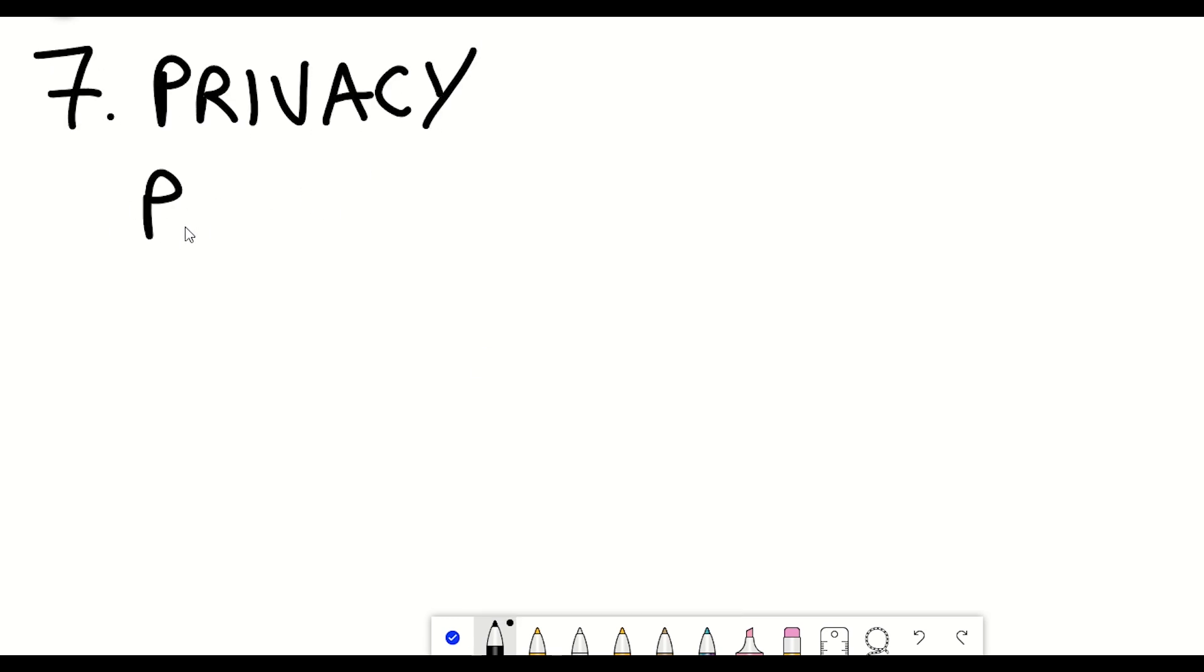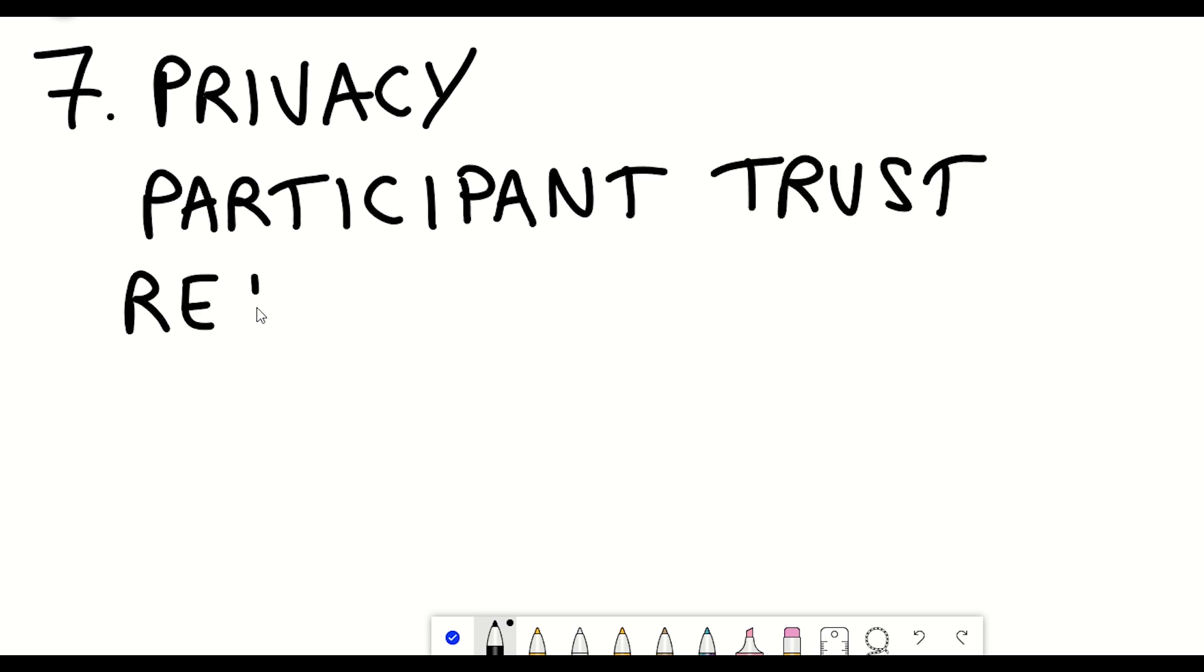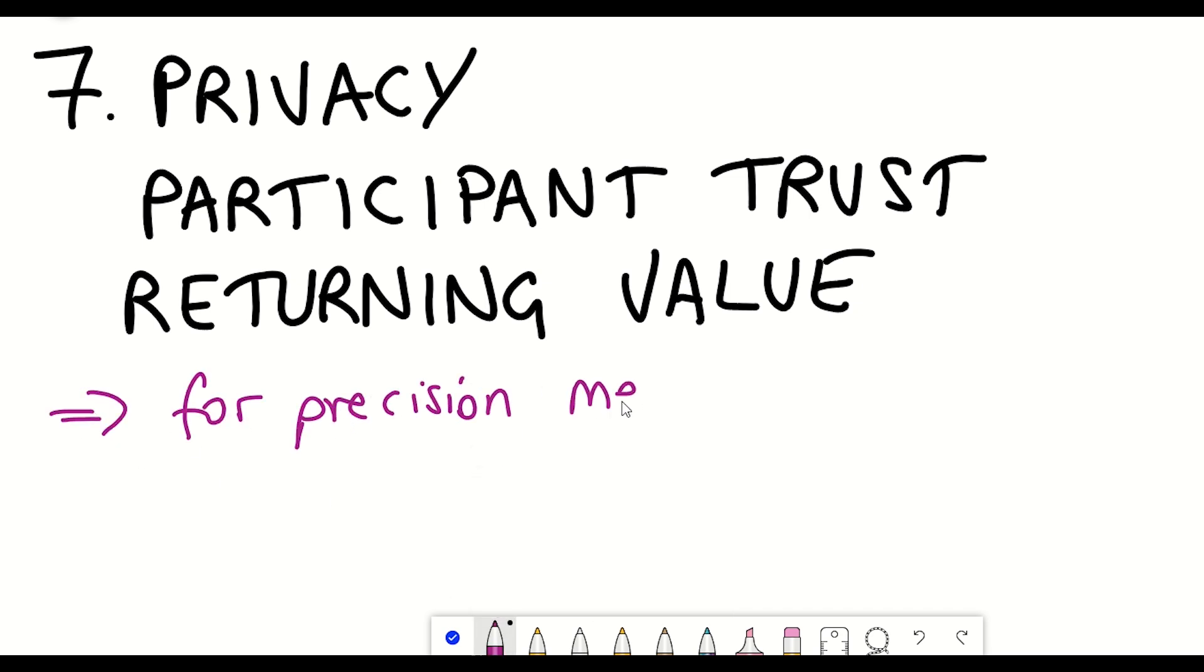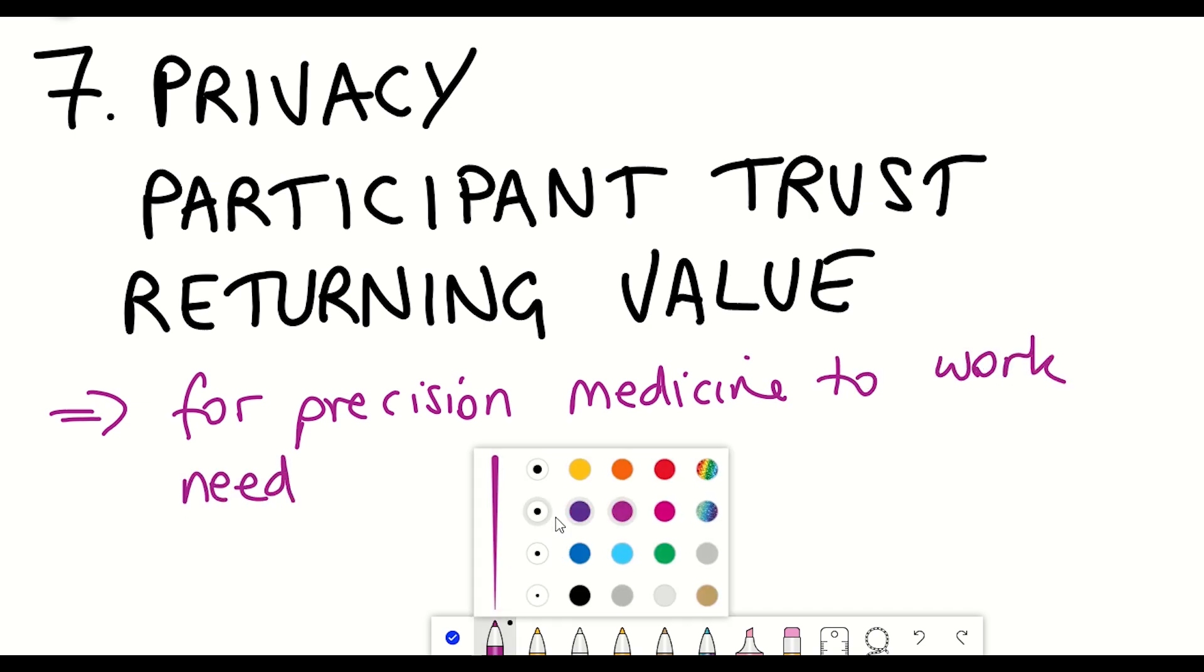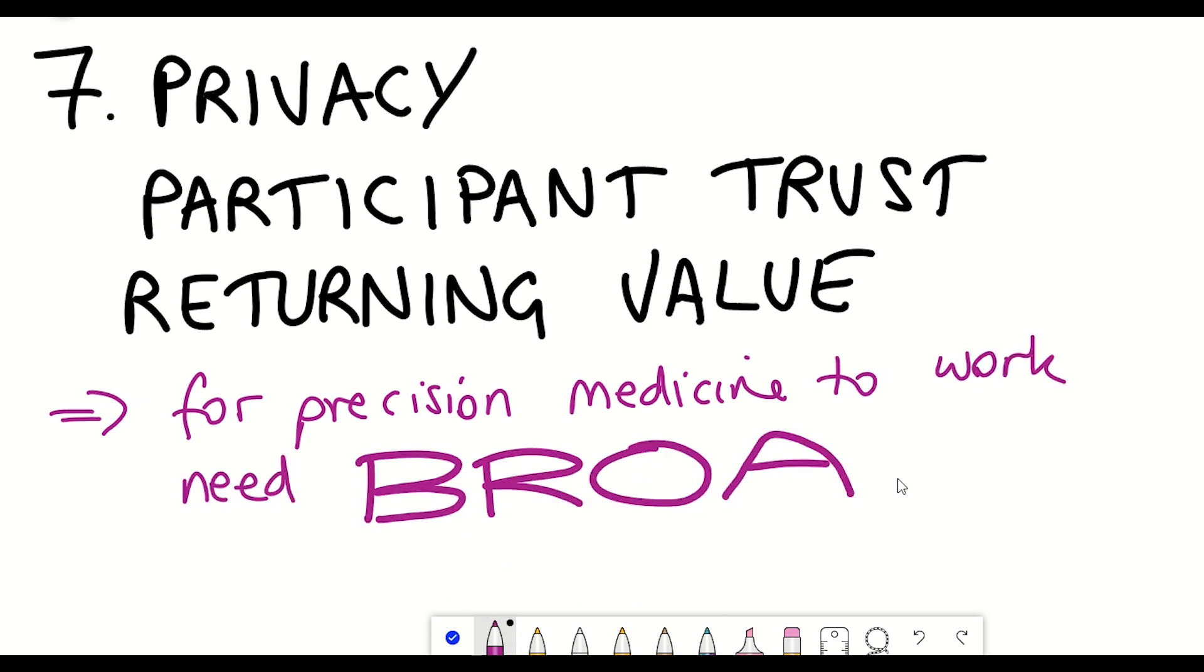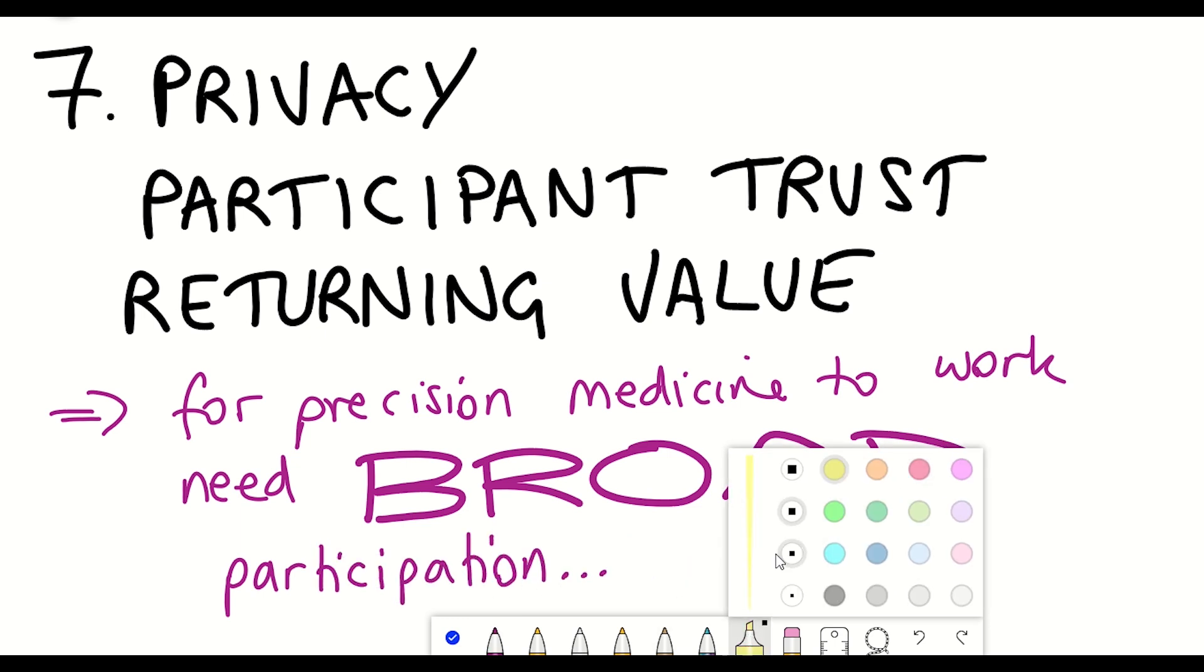And so this brings us on to the last, and what I think is probably the most important opportunity discussed in this article, which is privacy, participant trust, and returning value. And so what this last opportunity is talking about is the fact that the utility of precision medicine very much depends on there being broad participation. But to have broad participation of a large population, it requires trust from individuals, protection of privacy, and a return of value to those participants.